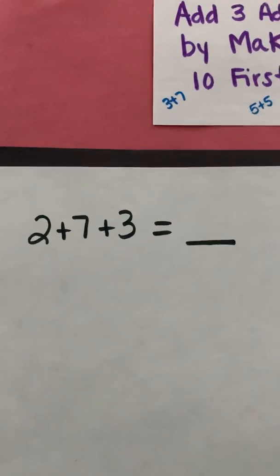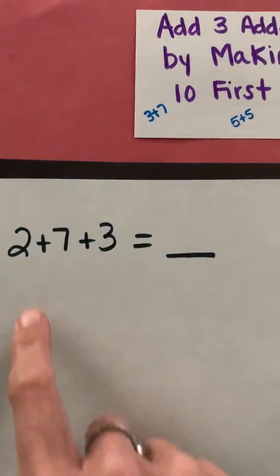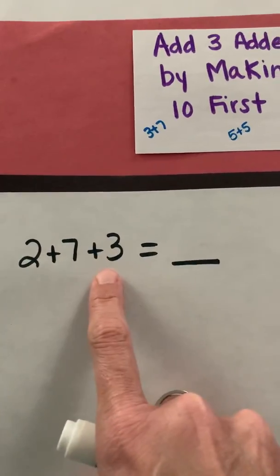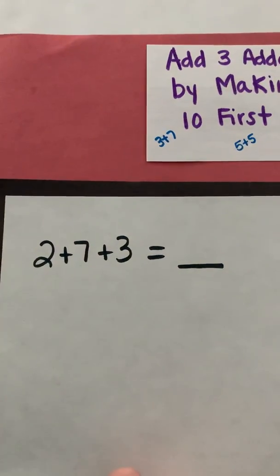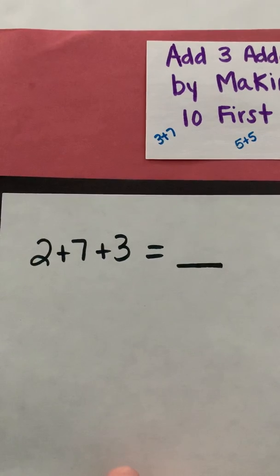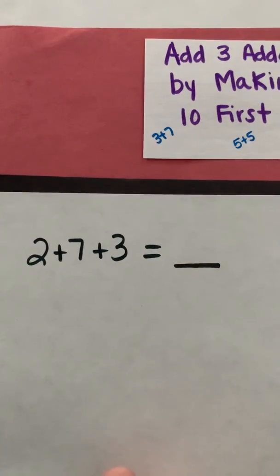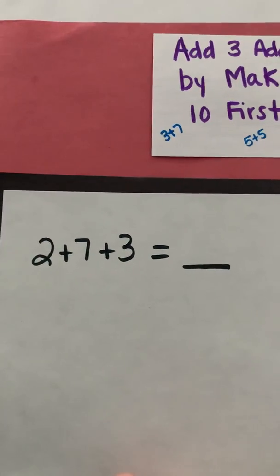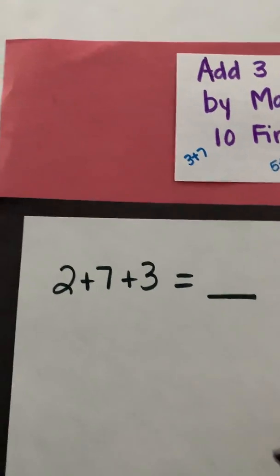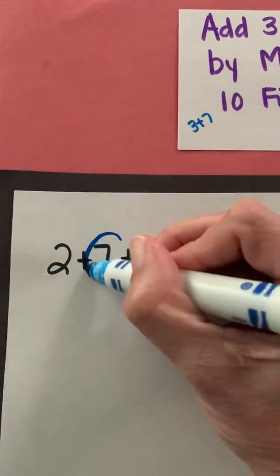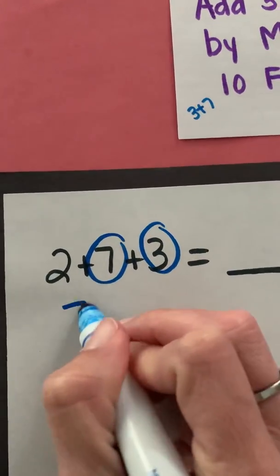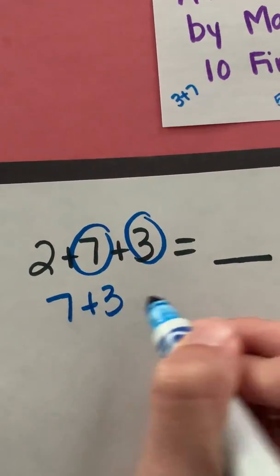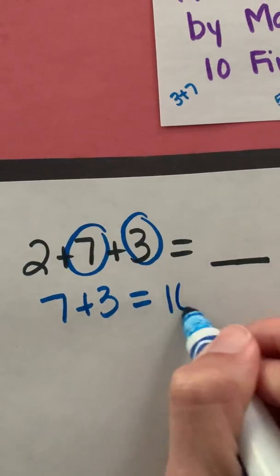So here you can see we have two plus seven plus three which is an addend plus an addend plus an addend which will give us our sum. So I'm looking at the numbers and I'm trying to decide what I can add together to make a 10 first. Do I even see something that will give me a 10? Well I can see that seven plus three will give me 10. So I know that seven plus three will equal 10.